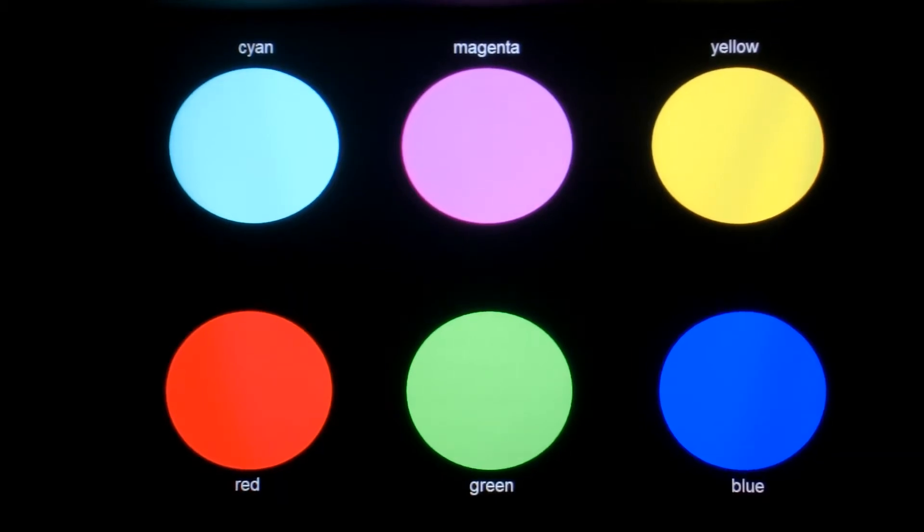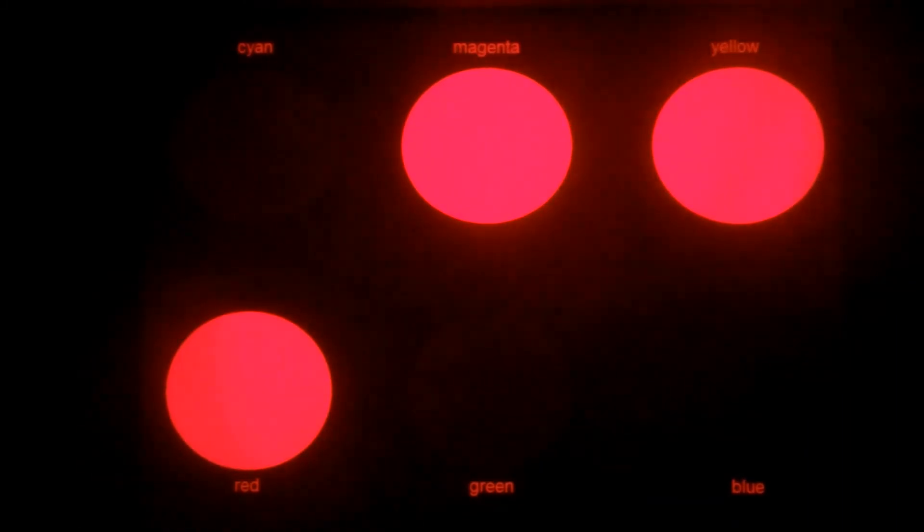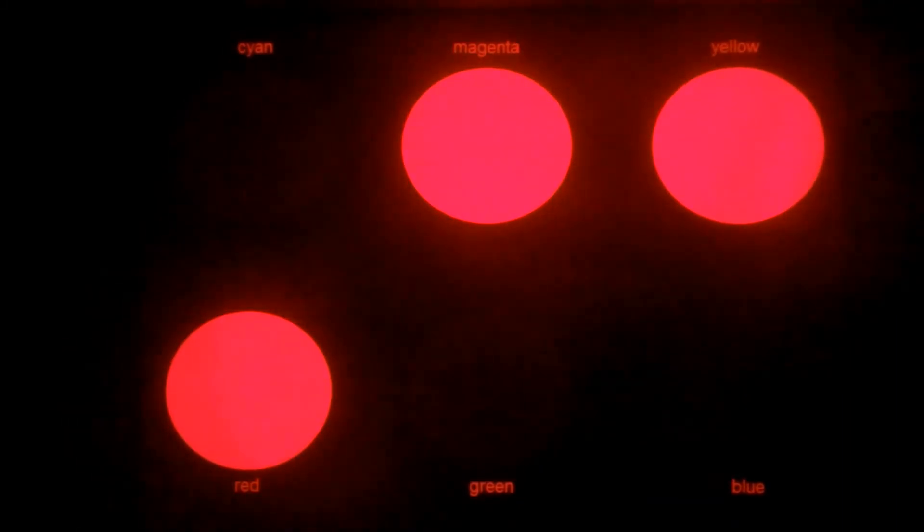We're now going to see what these color spotlights look like when viewed through different color filters. We first put the red filter in front of the camera. Red blocks out all colors except red.